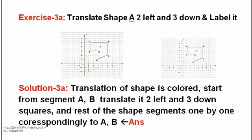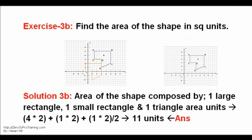Translation of shape is colored. Start from segment AB translated 2 left and 3 down squares, and rest of the shape segments one by one correspondingly to ABC. Exercise 3B: Area of the shape composed of 1 large rectangle, 1 small rectangle and 1 triangle. Area units are 8 plus 2 plus 1 equals 11 units.